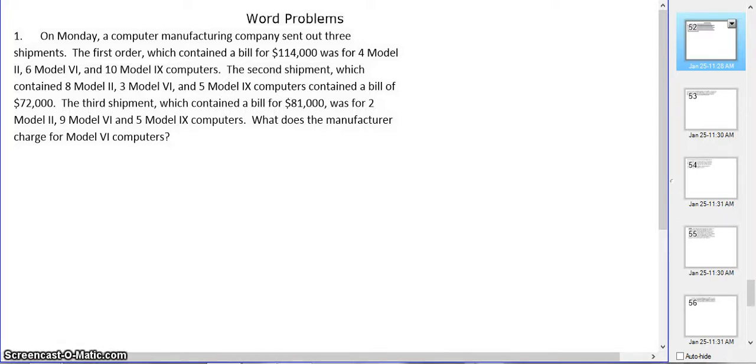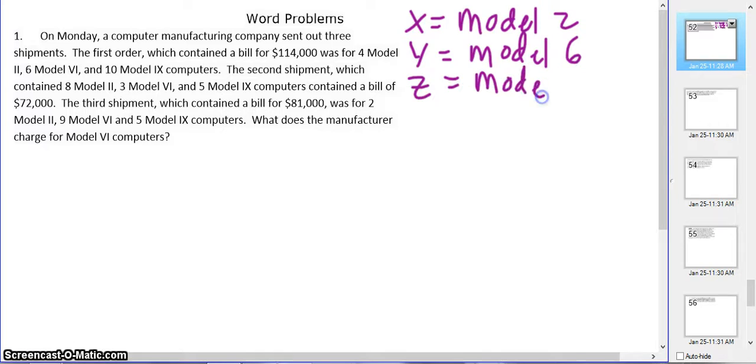We're going to set up a system of equations, and the total is always going to go last. X will be Model 2, Y is Model 6, and Z will be Model 9. My first equation, I have 4X + 6Y + 10Z, and the total bill was $114,000.